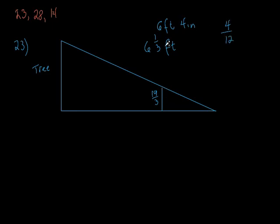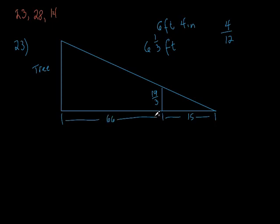Everybody see what we did there? It's 4 out of 12, which is one-third. 6 and one-third — that's 18 plus 1 is 19 thirds. So that's the height of Dave. His shadow is 15 feet long, so from here to here is 15. And it says if he's standing 66 feet away from the tree — here's the tree, here's where he's standing — so guess what: this number from here to here is 66 feet. And then it says what's the height of the tree, which is what we're trying to solve for.